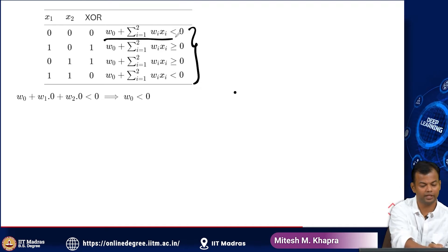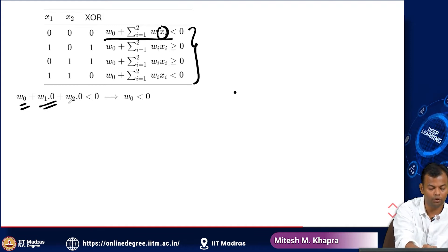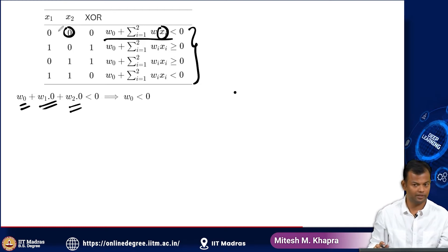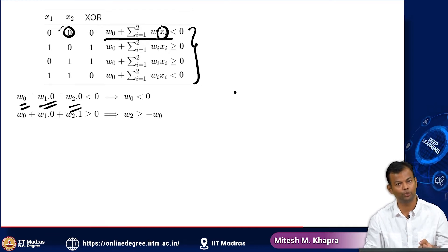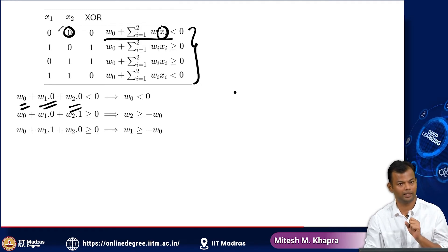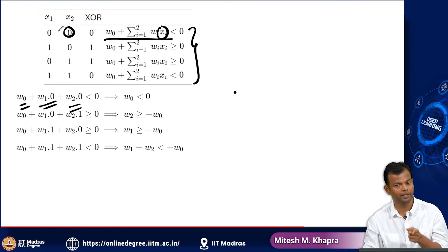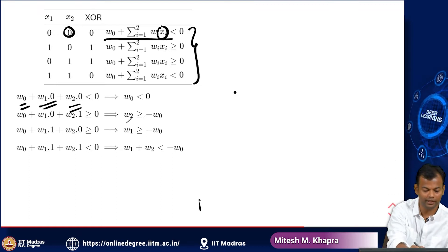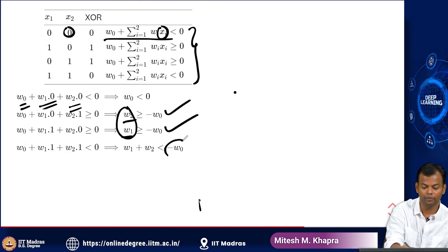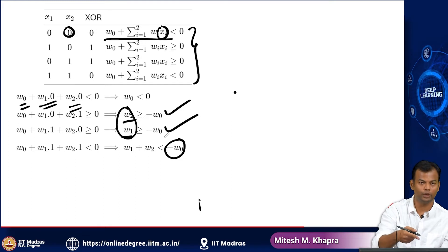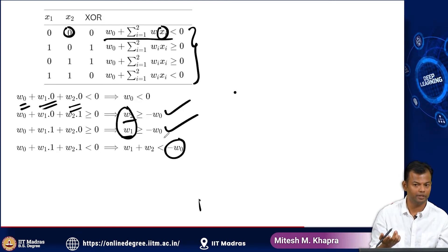Let us expand this. The first condition gives: W_0 plus W_1 times 0 plus W_2 times 0 should be less than 0, leaving us with the condition that W_0 should be less than 0. Expanding the other conditions leaves us with W_2 greater than or equal to minus W_0, W_1 greater than or equal to minus W_0, and W_1 plus W_2 should be less than minus W_0. If I add the two inequalities, W_1 plus W_2 is greater than or equal to minus W_0, so I cannot simultaneously satisfy all 4 inequalities.